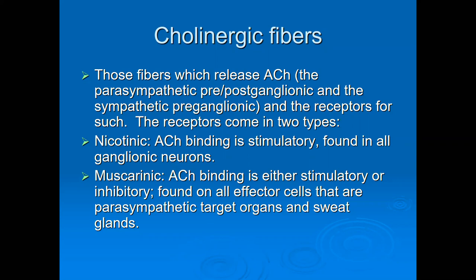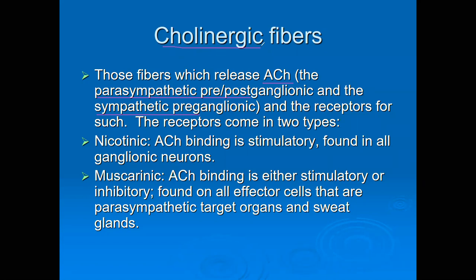Whether it's a nervous signal or an endocrine hormonal signal, it doesn't matter. Any of the fibers that are going to release acetylcholine — parasympathetic pre- and postganglionic and sympathetic preganglionic — are going to release acetylcholine. 'Ergic' means 'work,' so cholinergic means things that work with acetylcholine. The receptors for acetylcholine in the parasympathetic are cholinergic receptors — we're not going to worry about nicotinic and muscarinic.